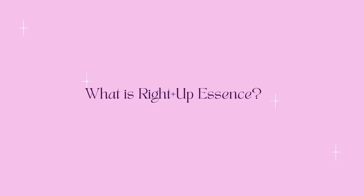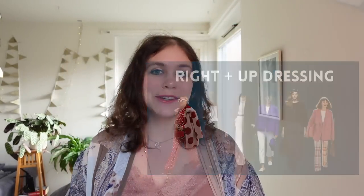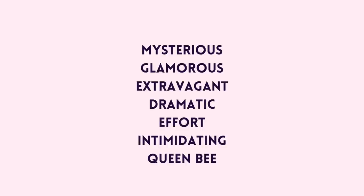Now let's talk about the essence. For the write-up essence, I've talked about this quadrant in my previous videos — I'll link them below. The main keywords for the write-up essence are: dreamy, radiant, refined, inspiring, luminous, the sun, and the ice queen, filtered through the upness.